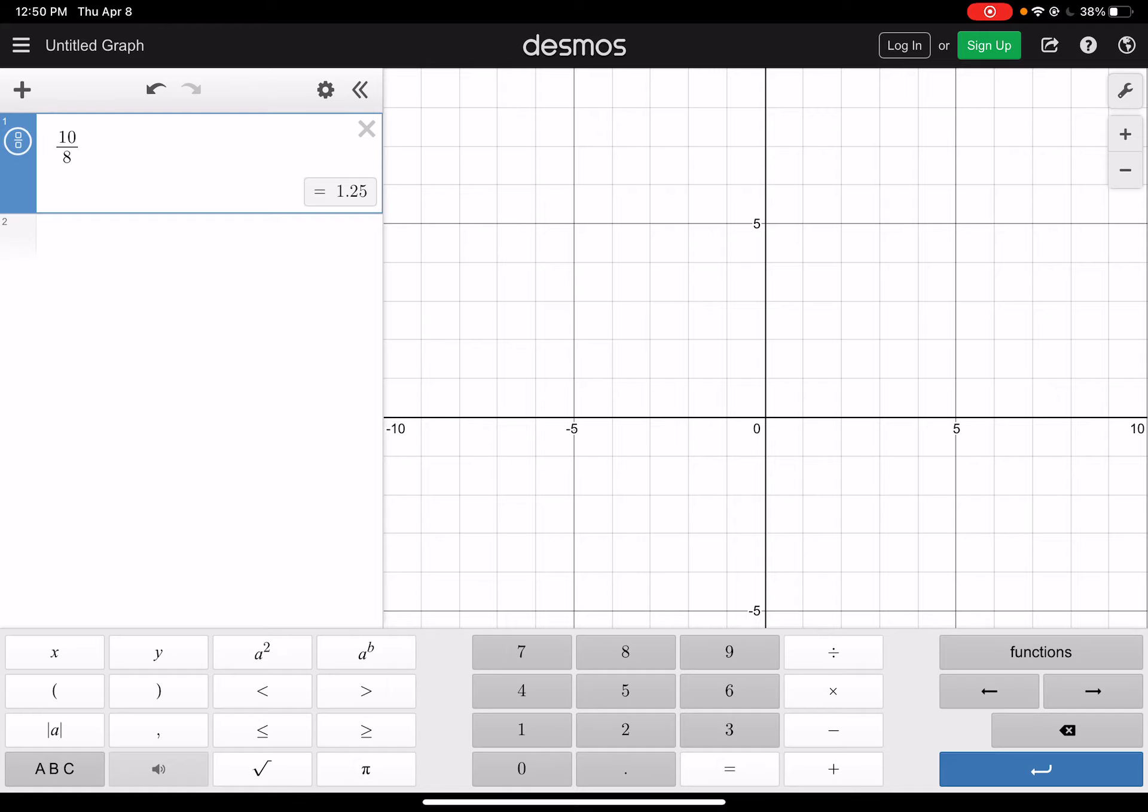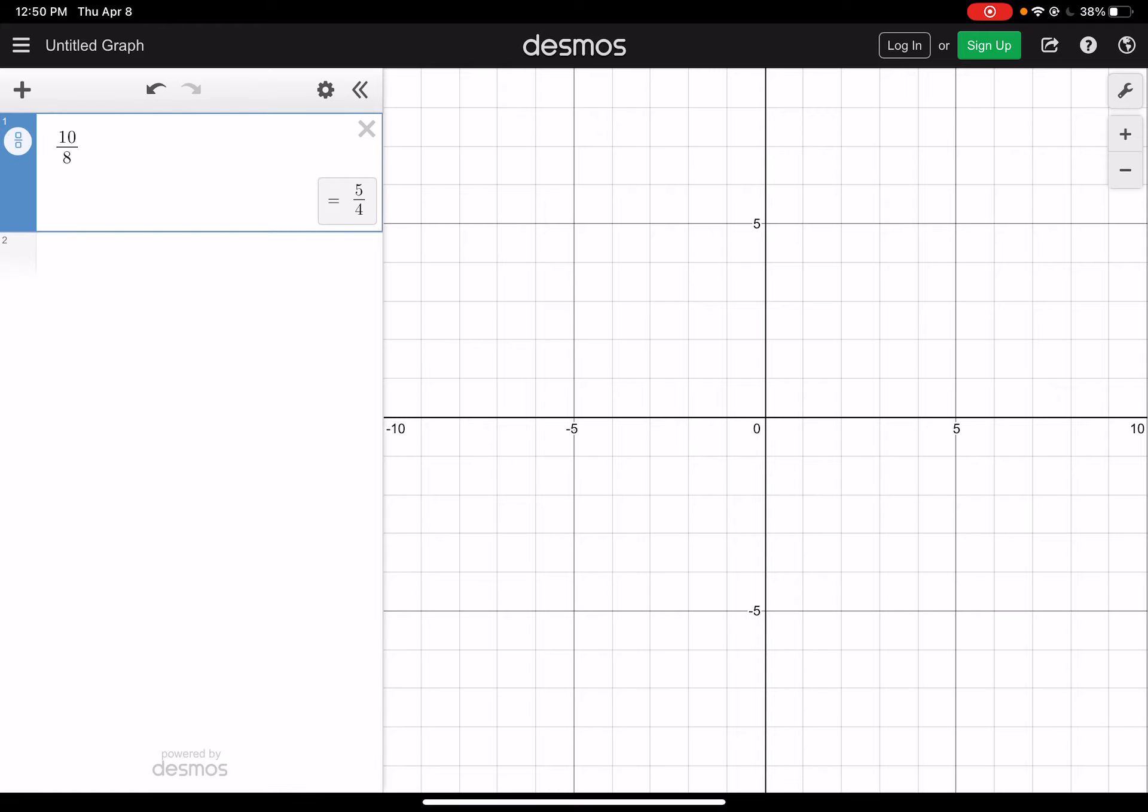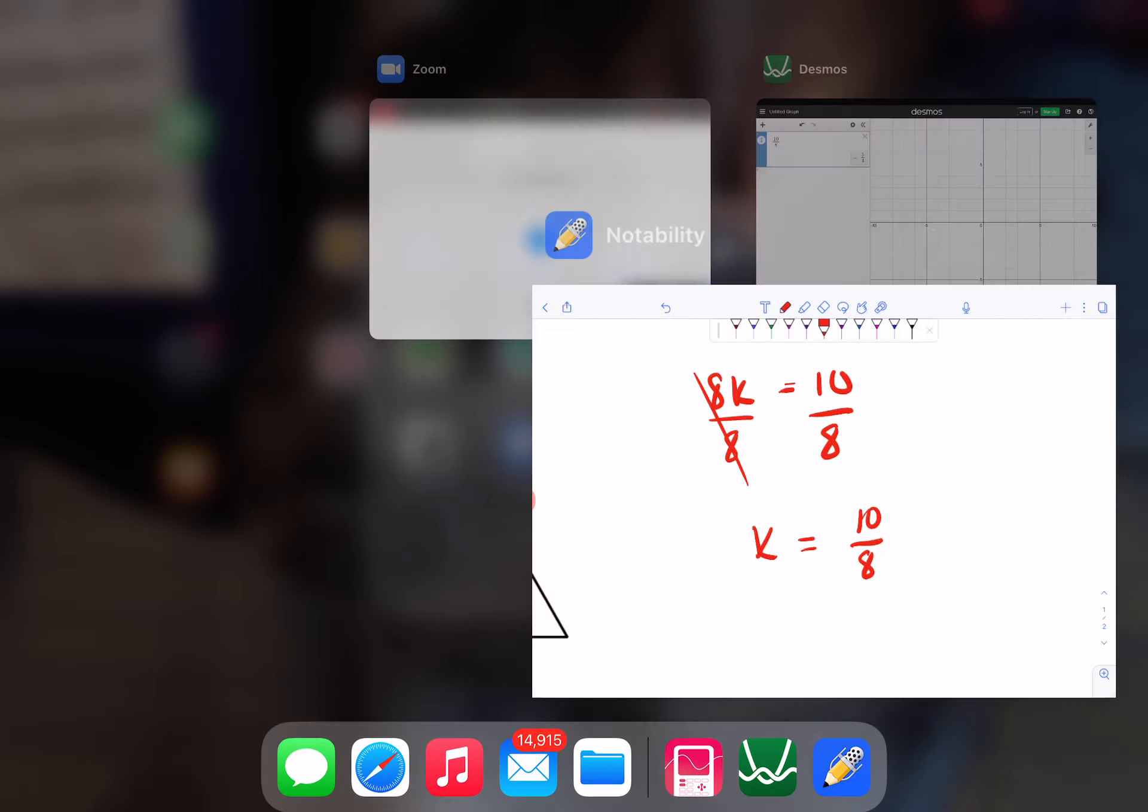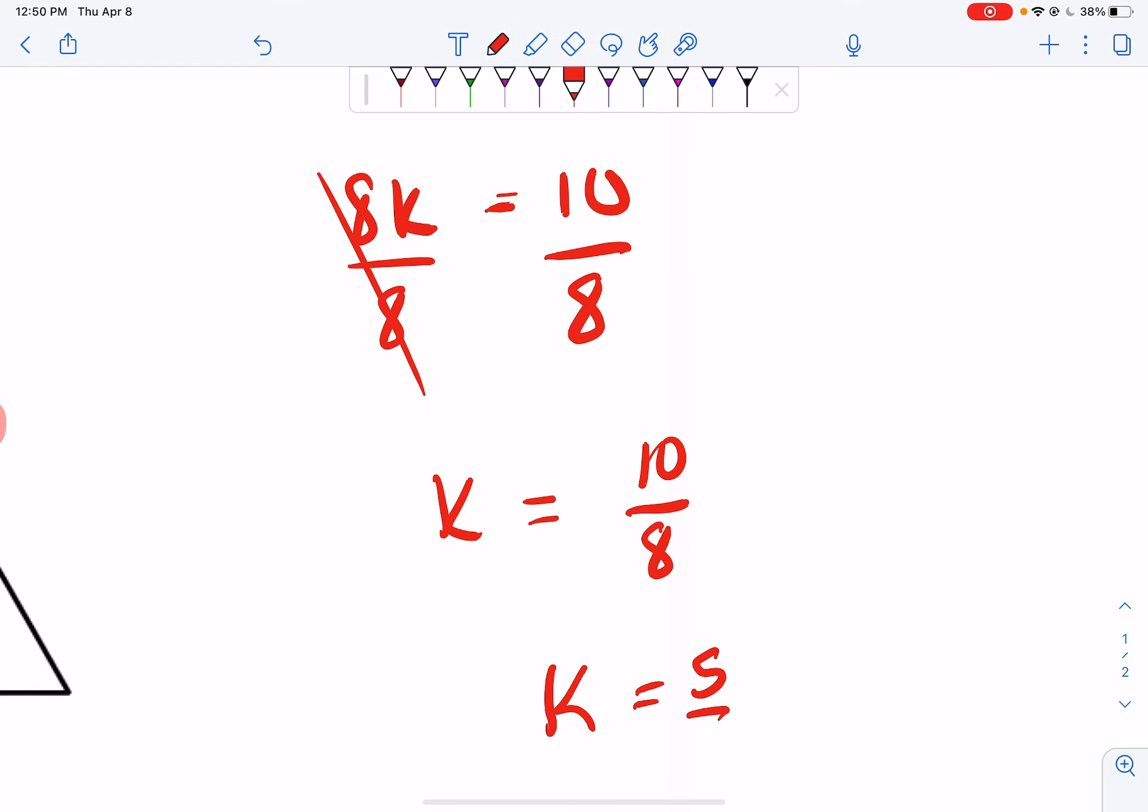And if I look, that's 1.25. But I said whole number or fraction. That reduces to 5 over 4. So I get k equals 5 over 4. So your final answer would just be 5 fourths.